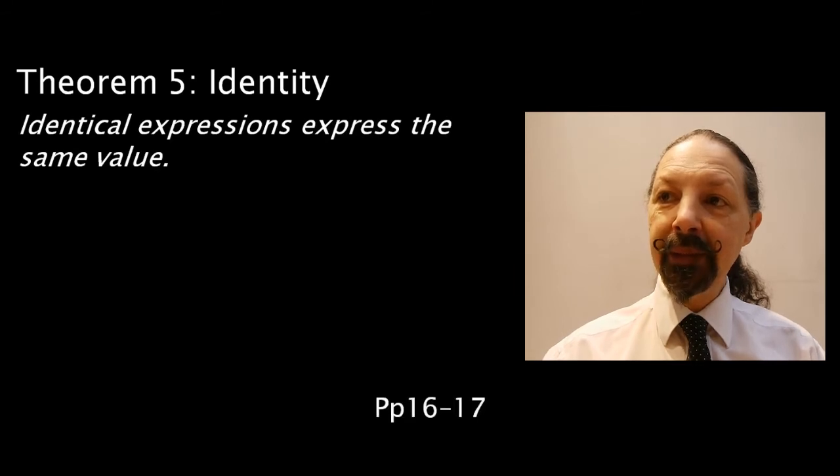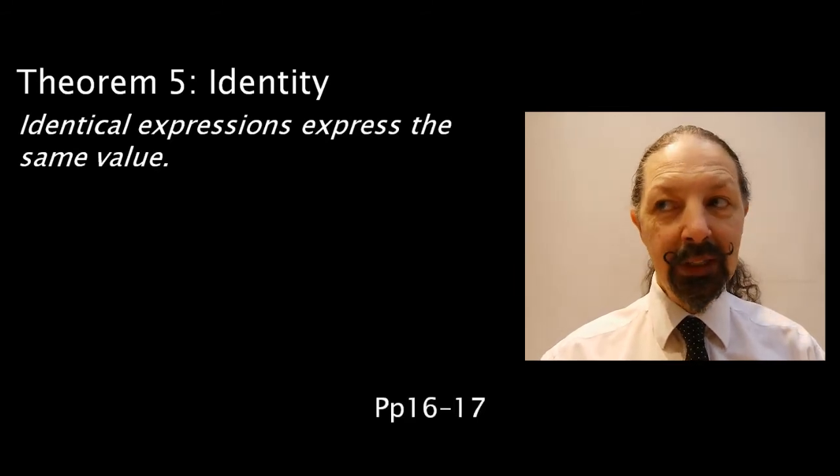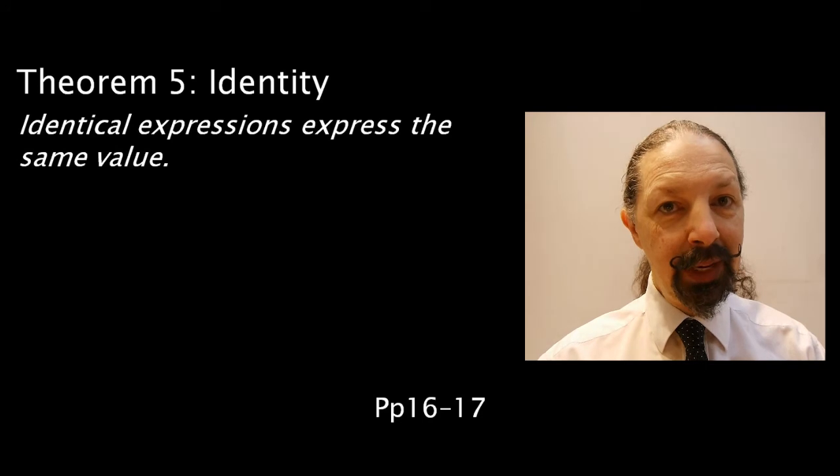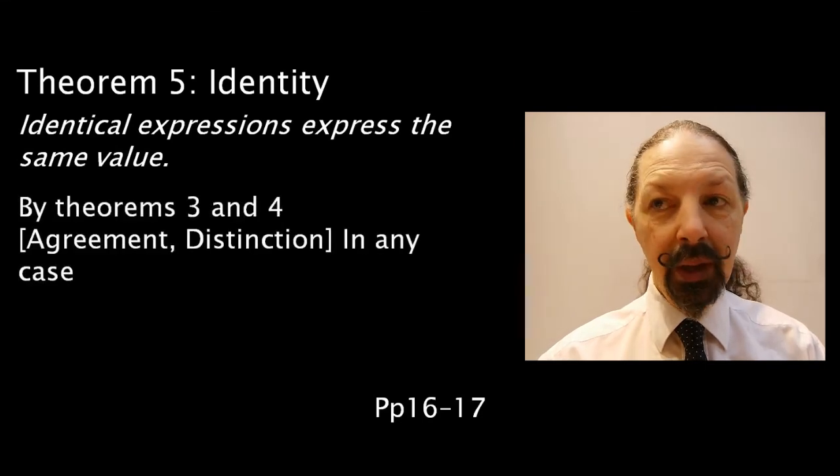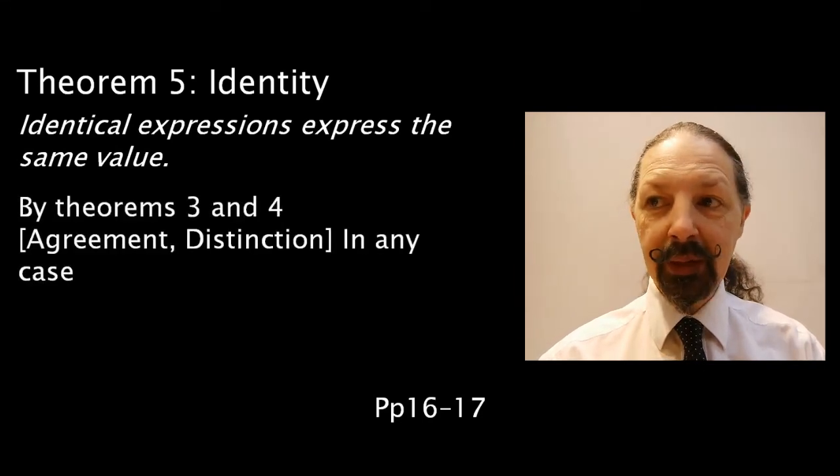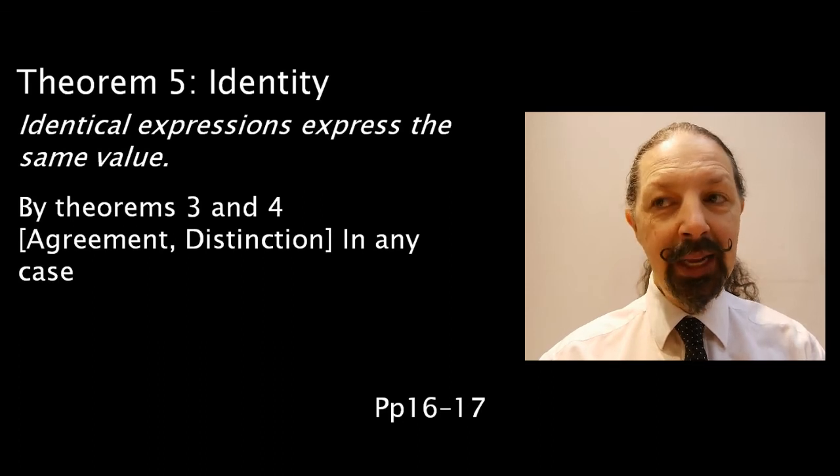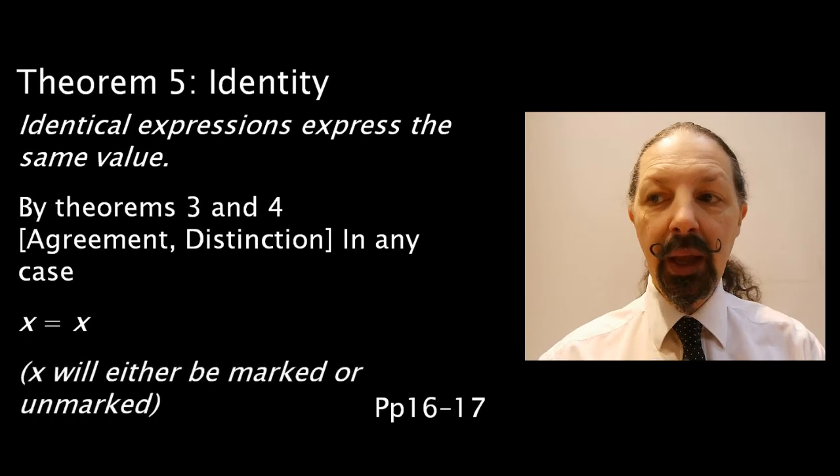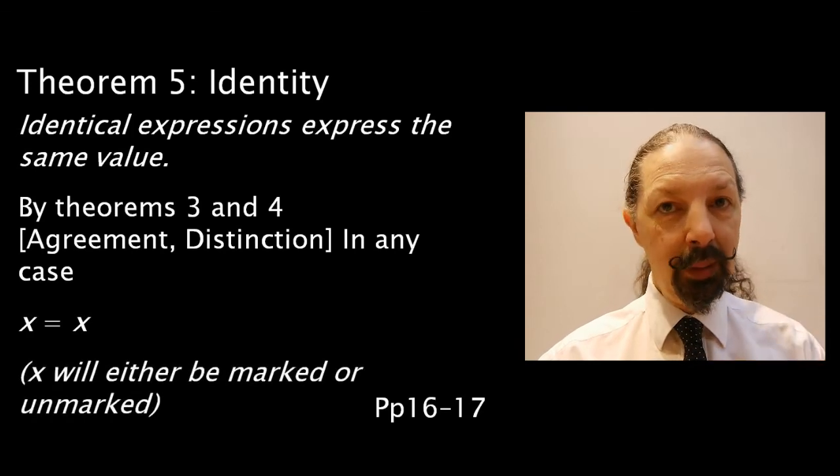Theorem five is about identity, and he states that identical expressions express the same value. And he proves it by theorems three and four agreement and distinction. In any case, he states x equals x. X will either be marked or unmarked.